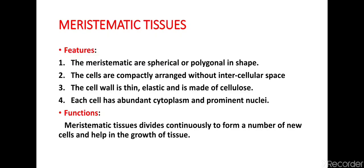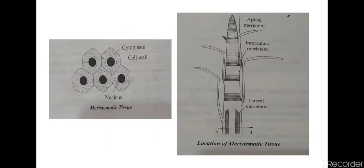Meristematic tissue is further divided into apical, lateral, and intercalary meristematic tissues. Here in this picture, you can see on the left side the picture of meristematic tissue showing the shape of the cell, the cytoplasm, cell wall, and nucleus. On the right side, you can see the location of different types of meristematic tissues — we have apical meristem.